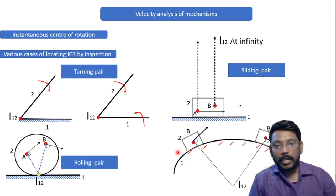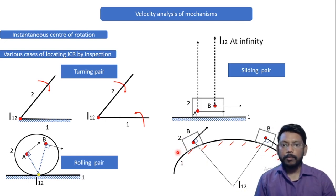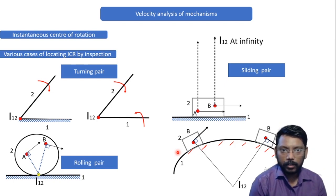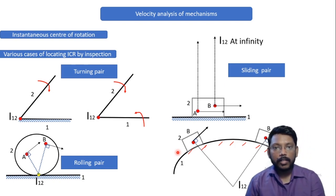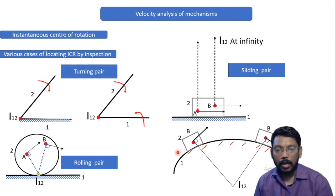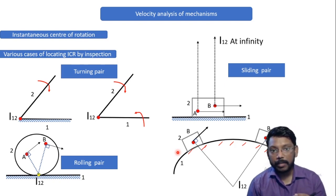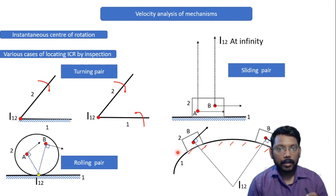So student, these were the four simple cases jaha pe ap by visual inspection easily ICR locate kar sakti ho. I'll repeat once again, turning pair hoga to intersection pe aega, sliding pair hoga to infinity pe aega, rolling pair hoga to point of contact pe aega, and agar sliding on the curved surface hai to curve ke center ke upar aega.